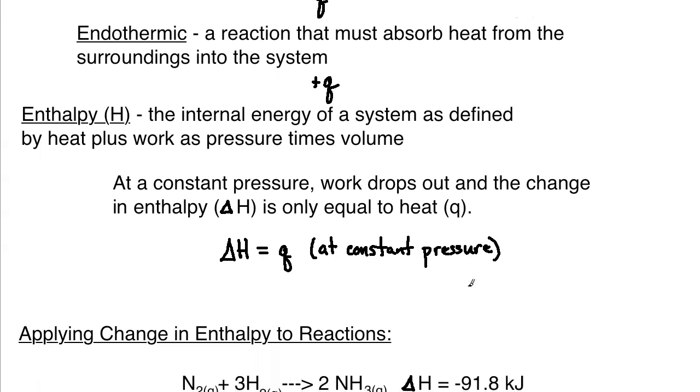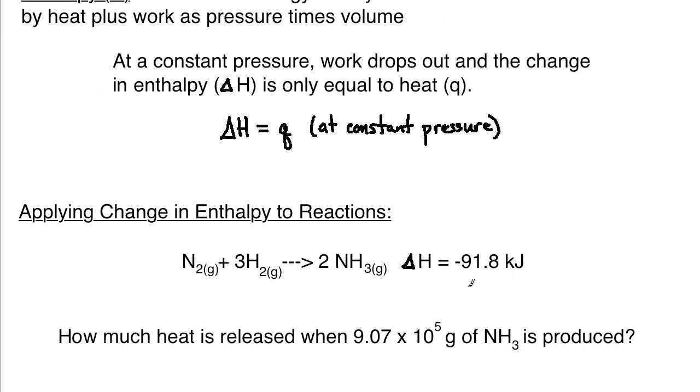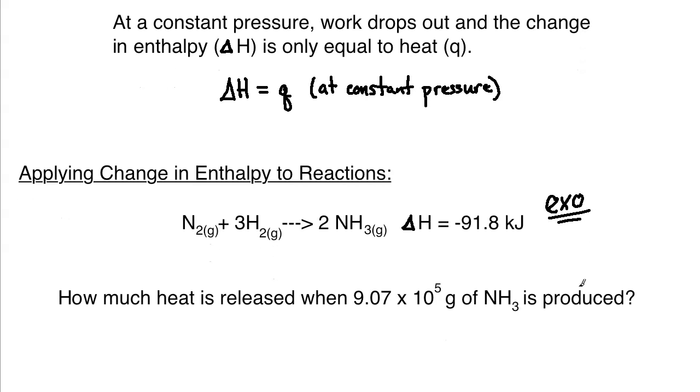From a stoichiometric standpoint, applying change in enthalpy to reactions: here's an example of a reaction. We have nitrogen gas and hydrogen gas combining together to give ammonia gas. This is a balanced equation - two nitrogens on the left and right, six hydrogens on the left and right. The delta H for this reaction is negative 91.8 kilojoules. The negative means this is an exothermic reaction because we're going to lose that much heat from the system.